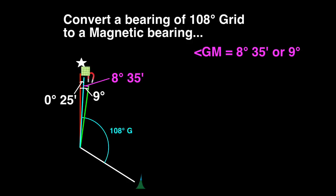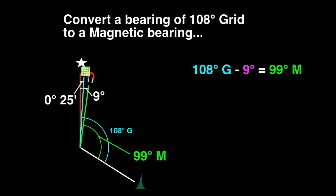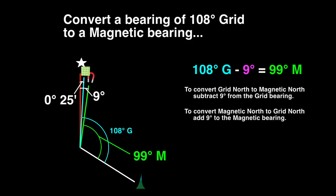Draw the 108 degree grid bearing onto the diagram. The answer we are seeking is the angle from magnetic north to the target. The magnetic bearing we are seeking is smaller than the grid bearing we were given, so we subtract 9 degrees from the 108 degrees grid value to get the answer of 99 degrees magnetic. To convert grid north to magnetic north, subtract 9 degrees from the grid bearing. To convert magnetic north to grid north, add 9 degrees.